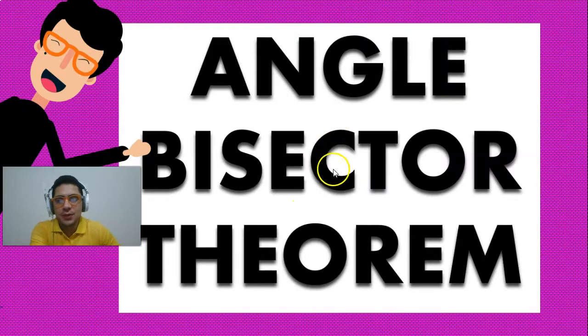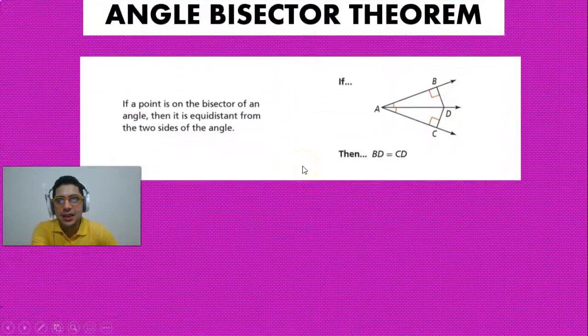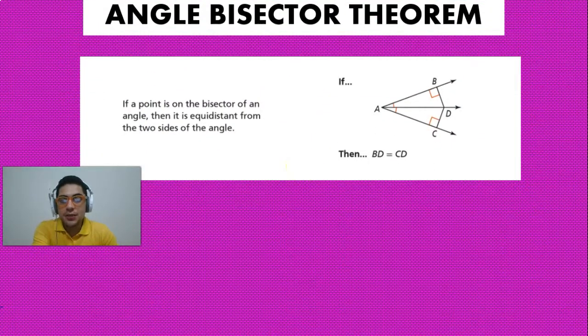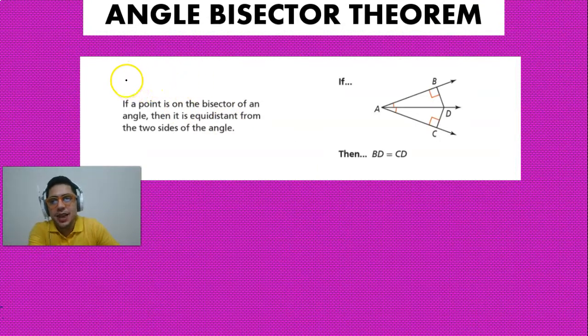Welcome to today's video in which we're going to be learning the angle bisector theorem. The first thing we have to remember is what is actually an angle bisector — an angle bisector is basically a line or a segment that splits the angle in half.